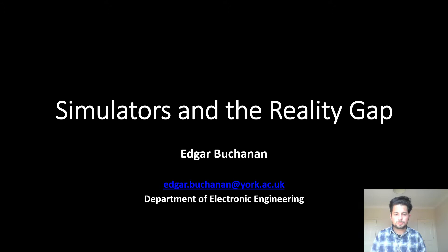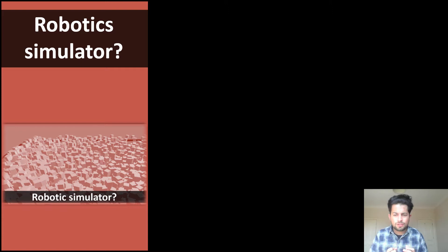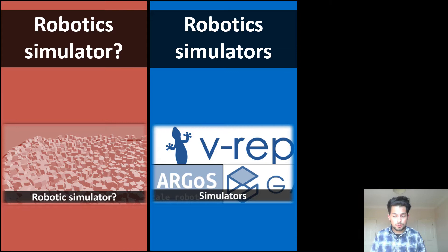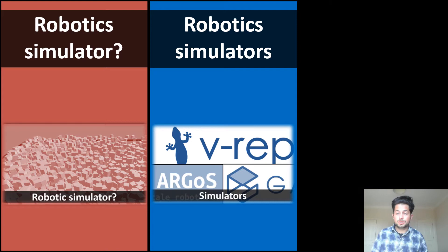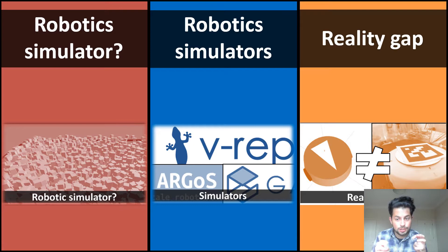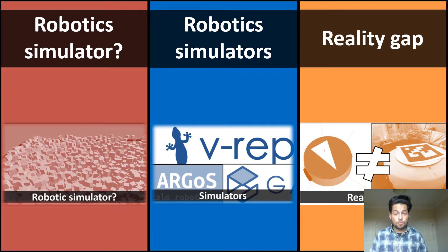In the first third of the talk we'll discuss why robotic simulators are important and what characteristics we look for in simulators. In the second third we'll talk about the simulators available that you can use, mentioning some advantages and disadvantages. In the last part we are going to talk about the reality gap — define it in more detail and show ways to decrease it.